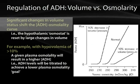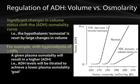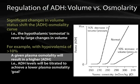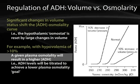A significant change in volume status will shift the ADH-osmolality curve. With hypovolemia of greater than 10 percent, more ADH will be released than would otherwise be released at a given osmolality. Normally, ADH release is governed by changes in plasma osmolality; however, if there is a 10 percent or more decrease in effective circulating volume, ADH secretion will be stimulated even at a low plasma osmolality. Conversely, a greater than 10 percent increase in effective circulating volume will inhibit ADH even in the setting of increased plasma osmolality.